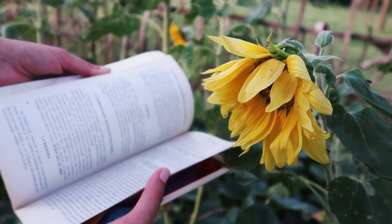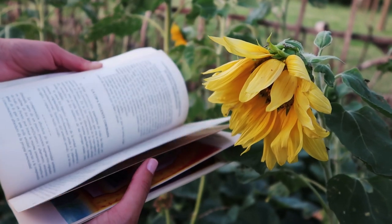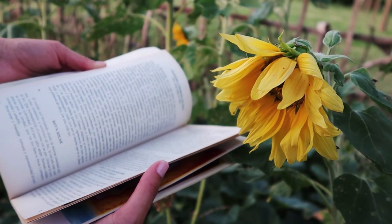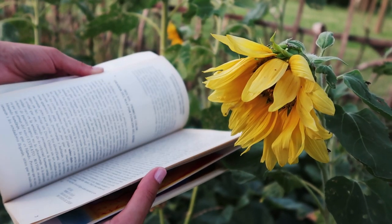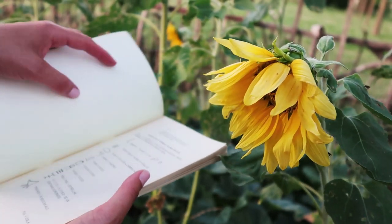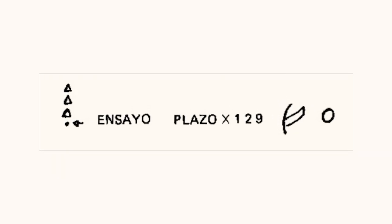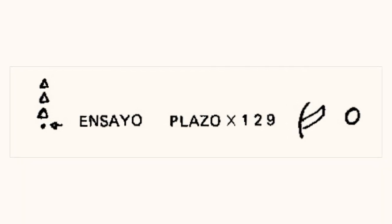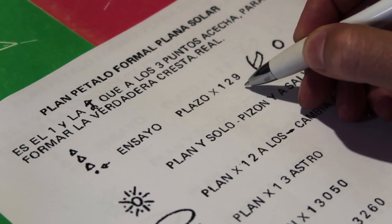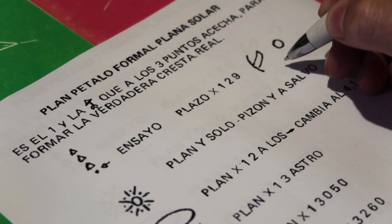¿Podrías desarrollarnos cuál es el contenido de esta información, ir línea por línea explicando de qué habla cada uno de esos caracteres y números que forman este texto? La primera habla del ensayo: todo esto ha sido programado en esta escuela, el ensayo se va haciendo por plazo, se va sumando la unidad con la dualidad, con el nueve, que es la parte de los hermanos, y se va gestando como si fuera un embrión.